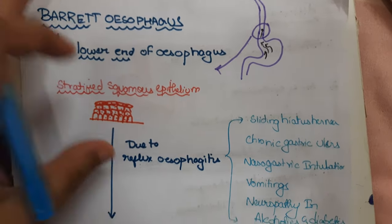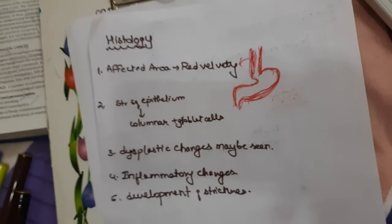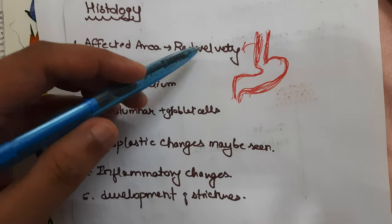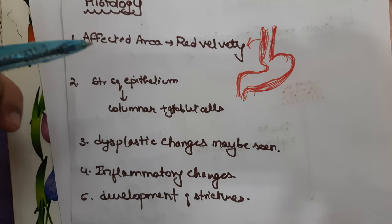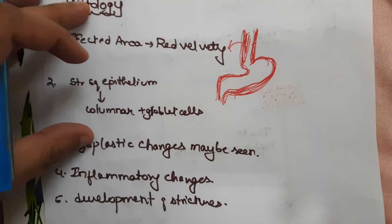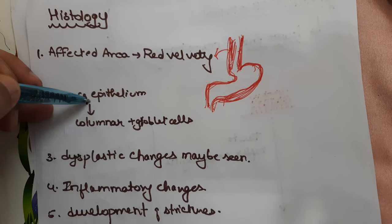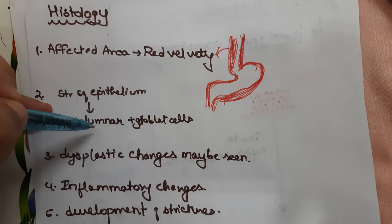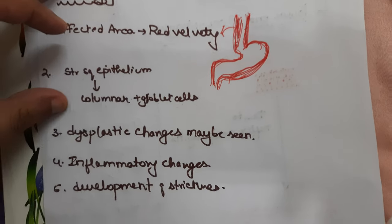Regarding the morphology of Barrett's esophagus: on gross examination, a red velvety appearance is seen, which can be observed on endoscopy. Histologically, the stratified squamous epithelium is changed into columnar epithelium containing goblet cells, which secrete mucus.